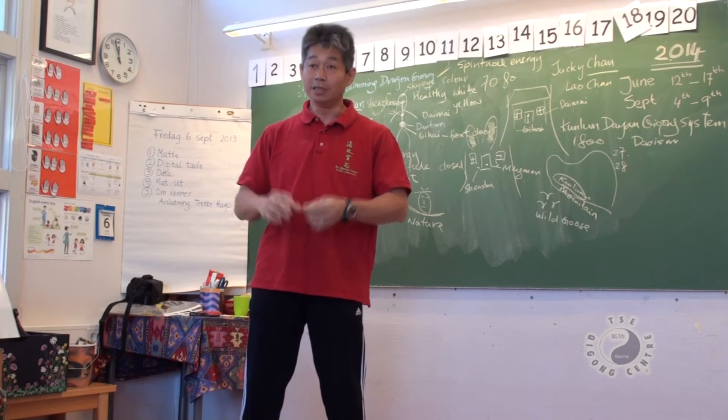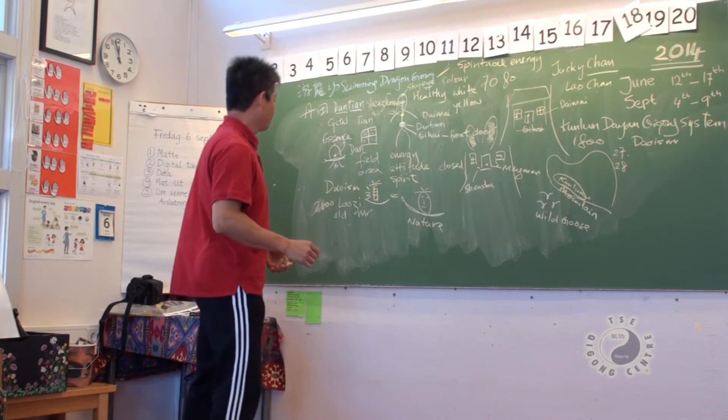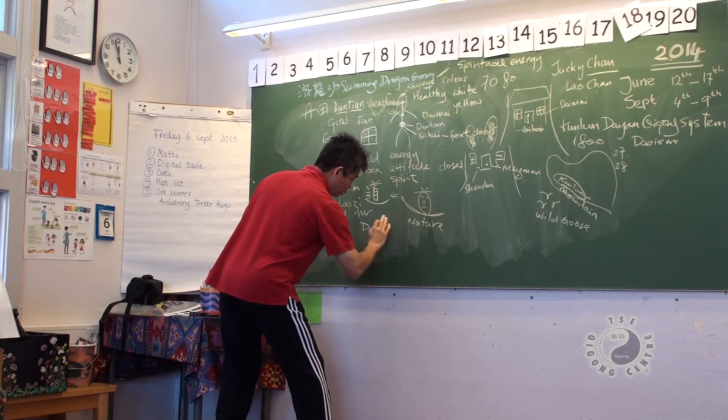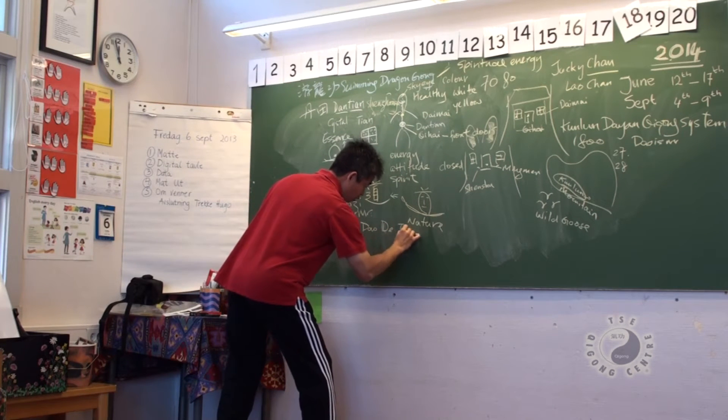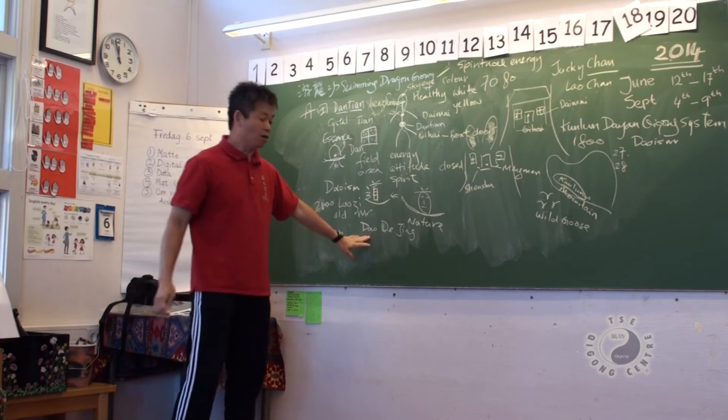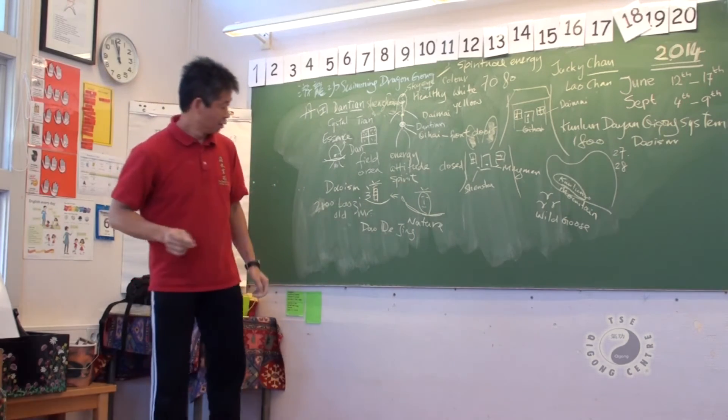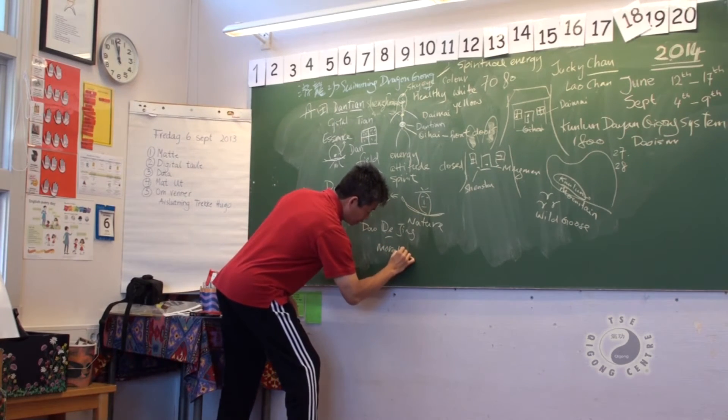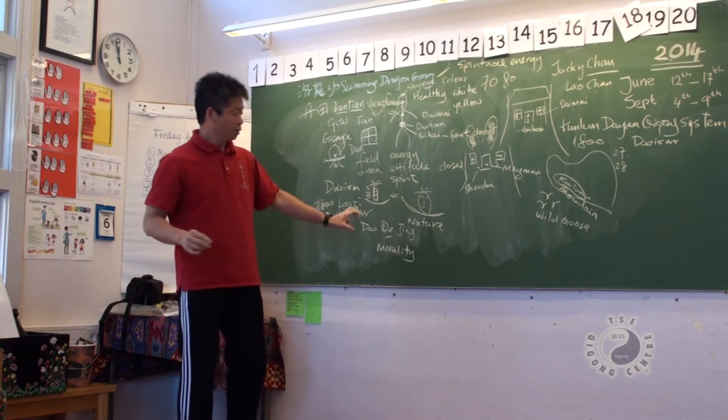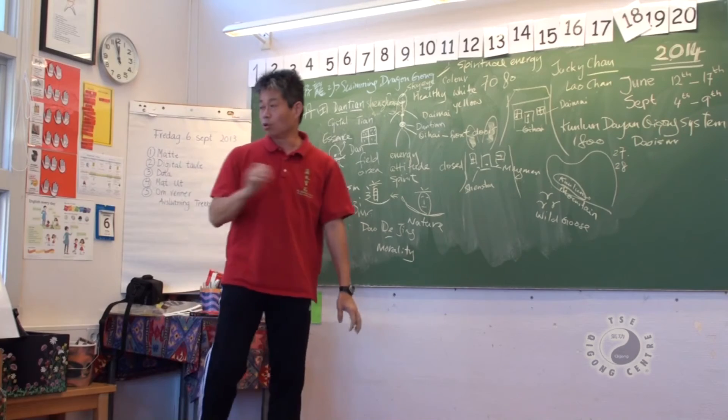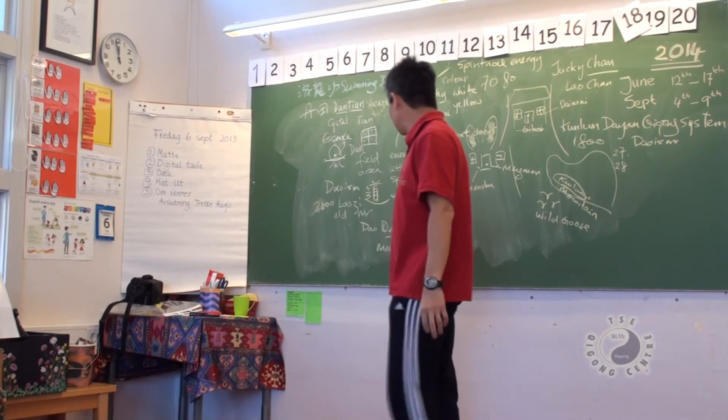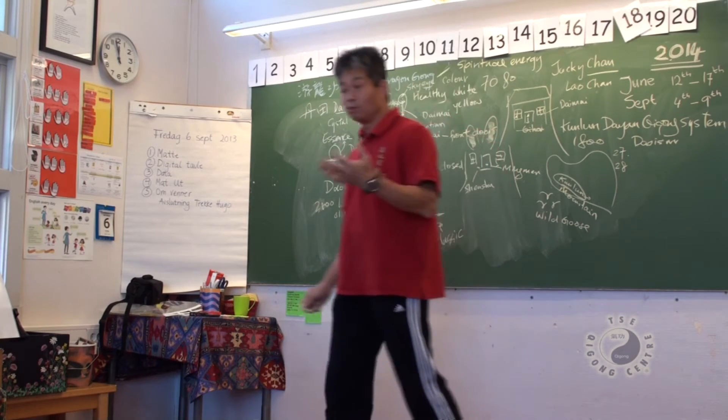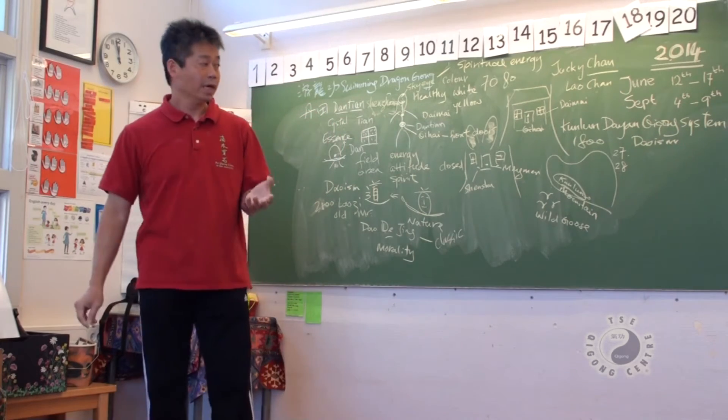Because he worked for the library in the Zhou dynasty. So he wrote a book called Dao. Dao means natural way. De means morality. The natural way with morality. Jing means classic book. Anything like Yi Jing.